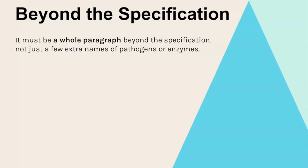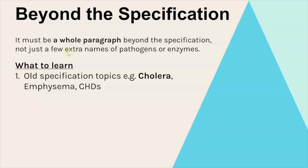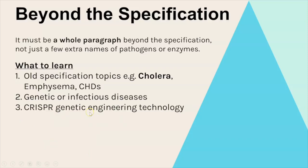So the final thing then, how to get that beyond the spec one or two marks. And it has to be, as I said, a whole paragraph. It can't just be a few extra names thrown in. So my top tips for what to learn to try and get to this is look at some of the old specification topics. So before the spec in 2015, have a look at the old spec because some things were taken off and that means they'll be in old textbooks that you can learn at the correct level of detail. So cholera, emphysema, different coronary heart diseases are some good examples. Or you could find out about maybe one genetic disease or infectious disease because that might link to a title. Or for gene technology and the importance of DNA and RNA, you could learn about CRISPR which is a really recent, or relatively recent, genetic engineering method.